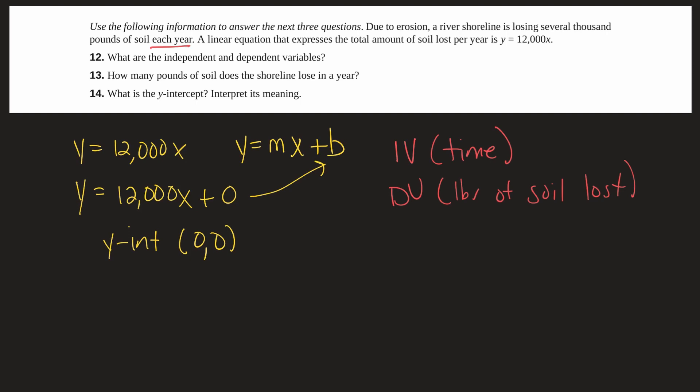Then we are asked how many pounds of soil does the shoreline lose in a year? Well in one year it's going to be 12,000 pounds because y is just 12,000 times one. So y equals 12,000 times one year. So y will just be 12,000 pounds of soil.